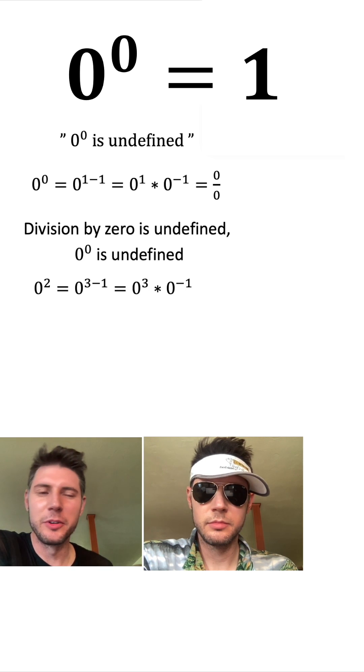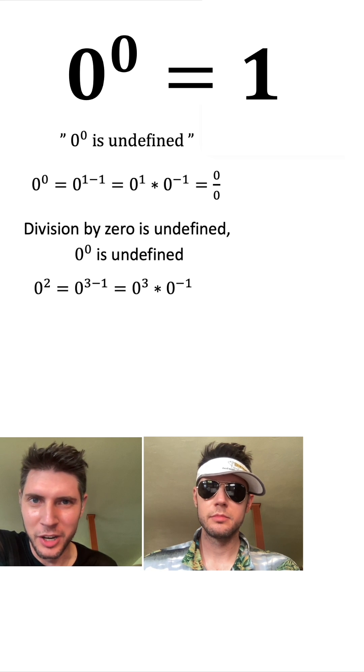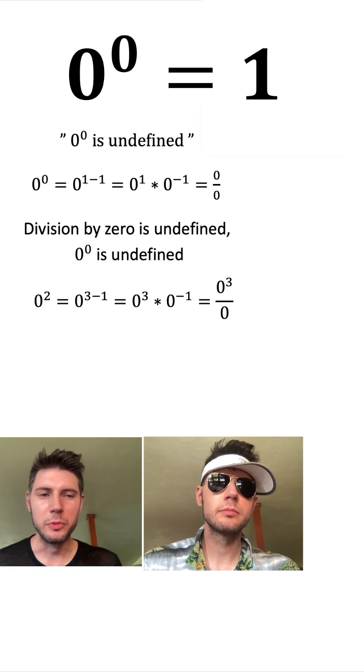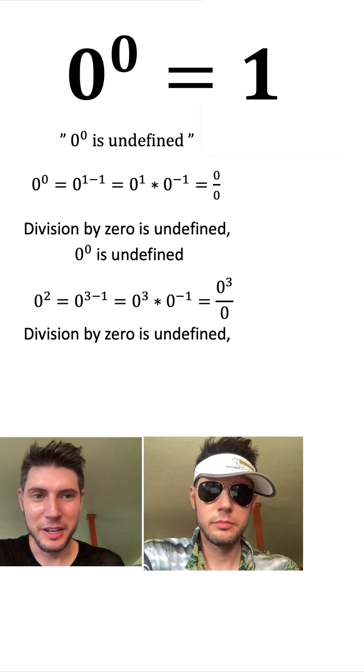minus one, which would be equal to 0^3 times 0^(-1), which would then be equal to 0^3/0. But I see division by zero, and we know division by zero is undefined.